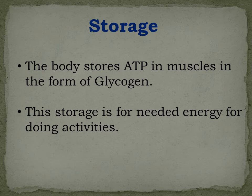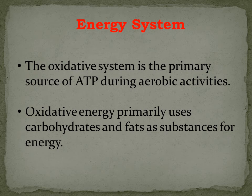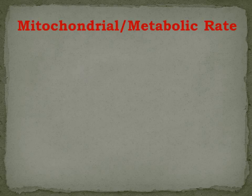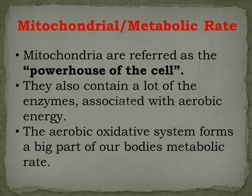Next, we have storage. The body stores ATP in the form of glycogen. This storage is for the energy needed for doing exercises. The oxidative system is the primary source of ATP during aerobic activities. Oxidative energy primarily uses carbohydrates and fats as substances for energy. Mitochondria are referred to as the powerhouse of the cell. They also contain a lot of enzymes associated with aerobic energy. The aerobic oxidative system forms a big part of our body's metabolic rate.